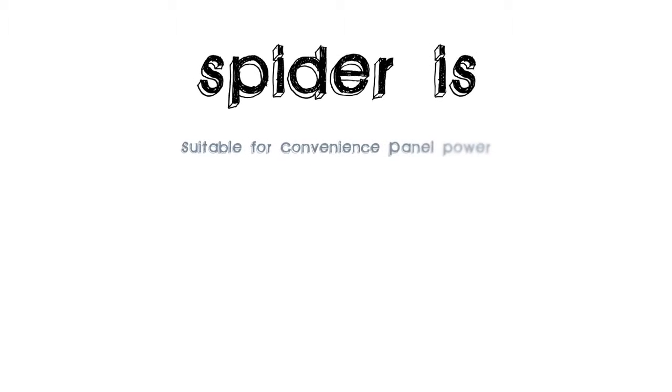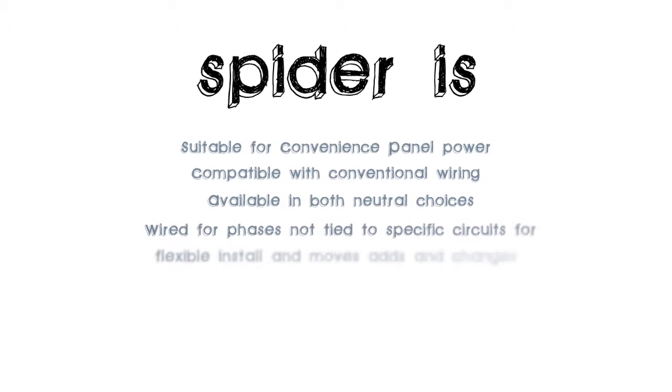To recap, SPDR is for convenience panel use and is compatible with conventional wiring. Components are available in either neutral choice. SPDR solutions are wired to match phases rather than specific circuits, making them more adaptable during install, moves, adds and changes.